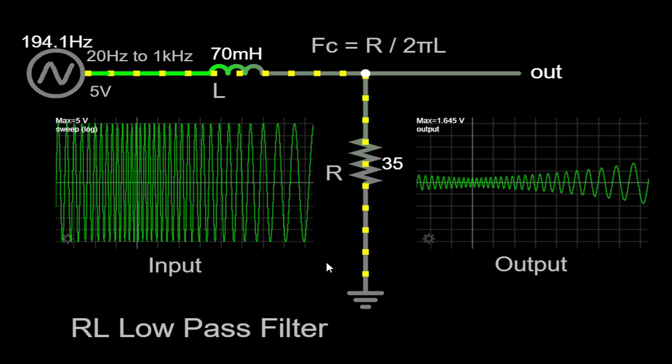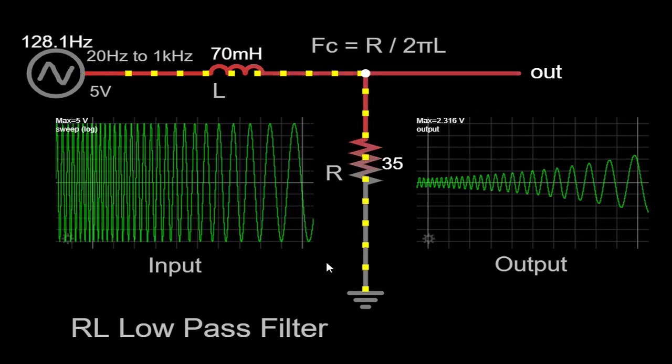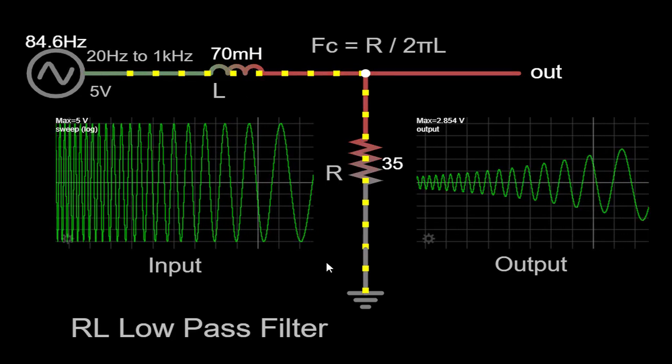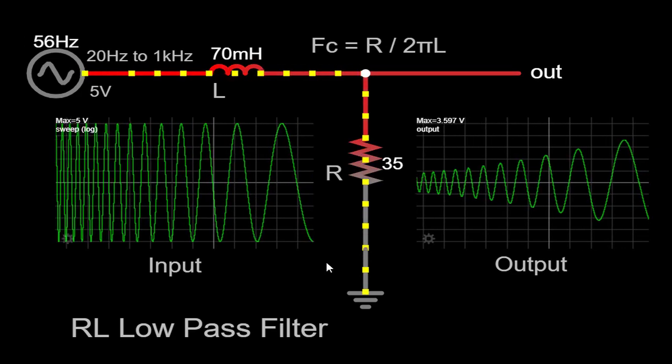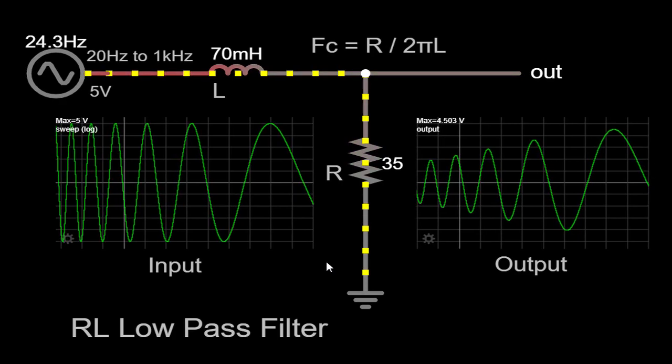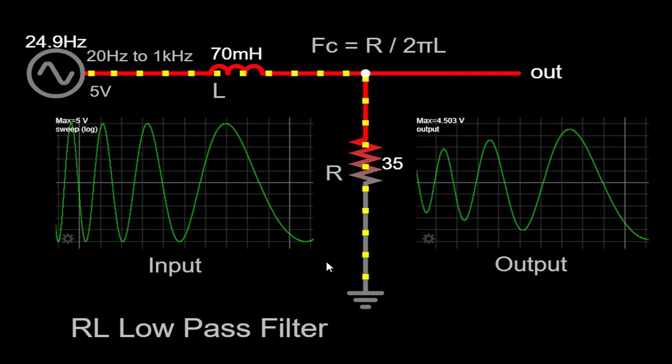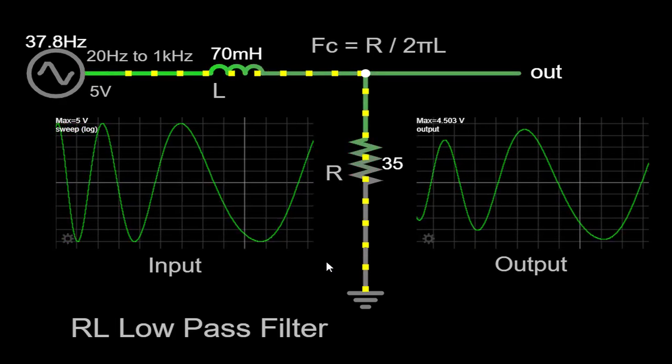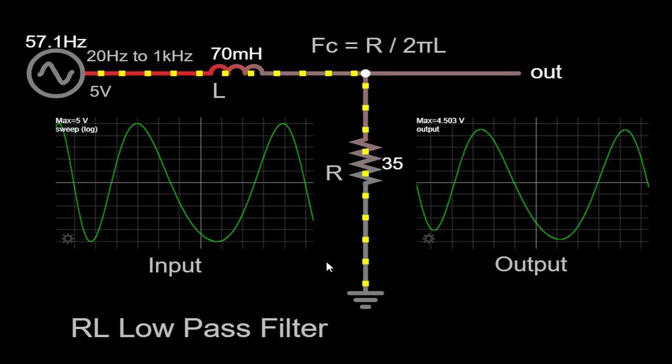This indicates that the filter has minimal effect on these low-frequency components. The inductor allows low-frequency signals to pass through with little attenuation, while the resistor dissipates a small amount of energy. As a result, the output waveform remains relatively similar to the input waveform, with only slight changes in amplitude due to the resistor's effect.